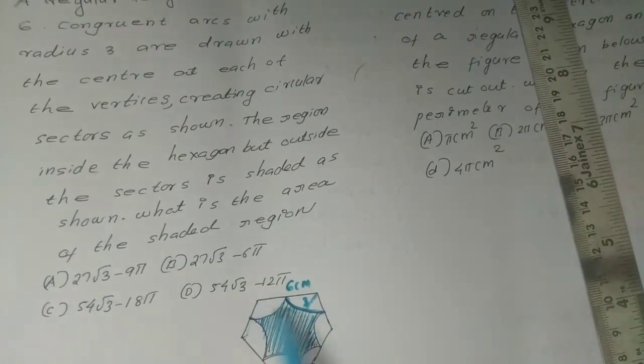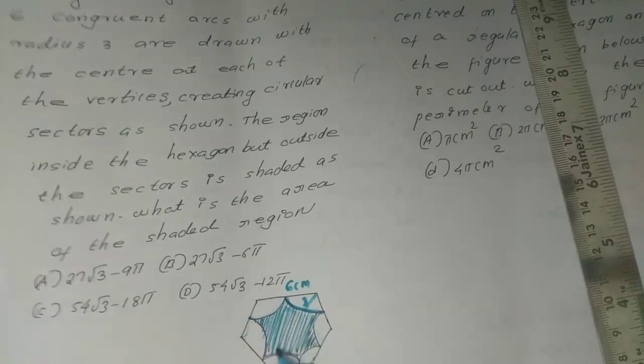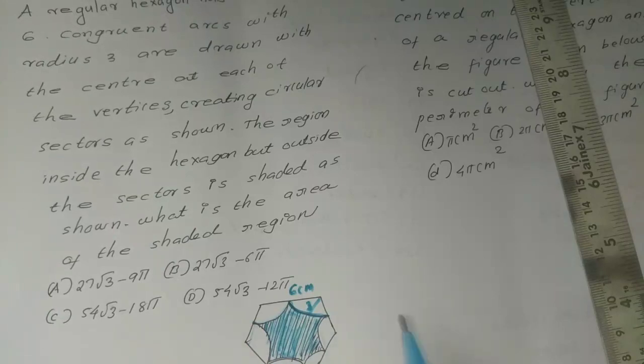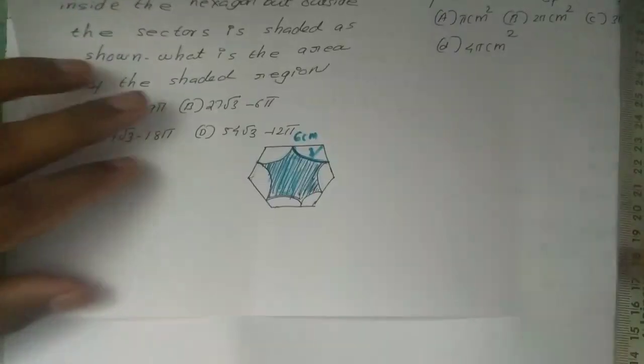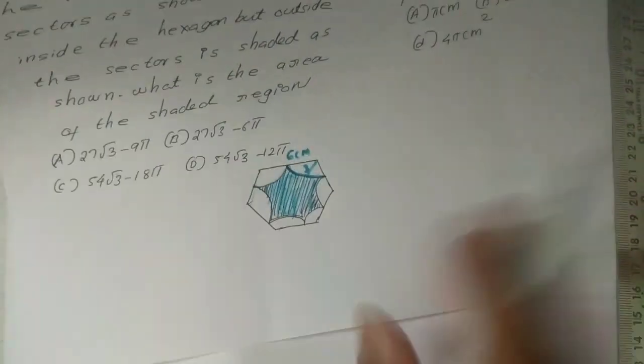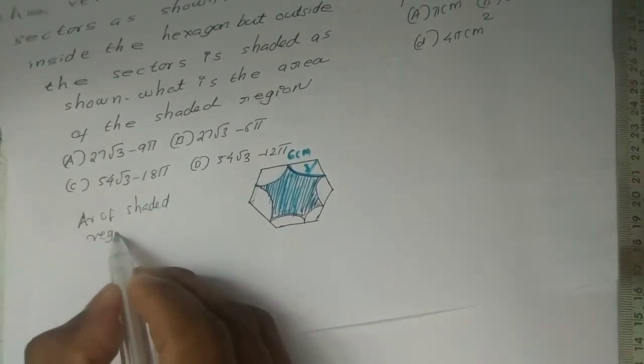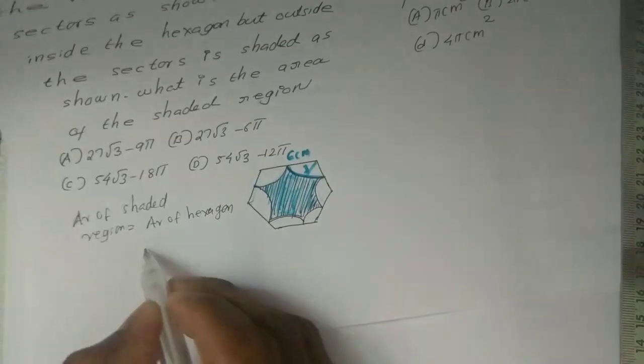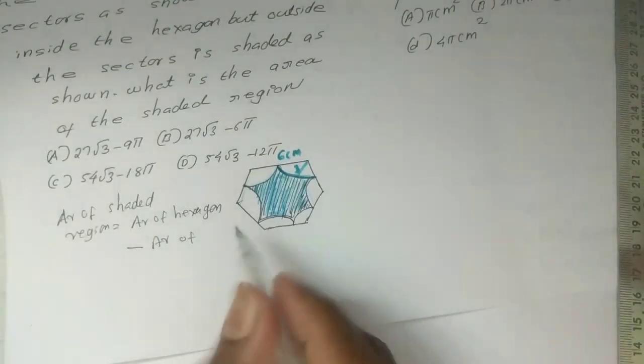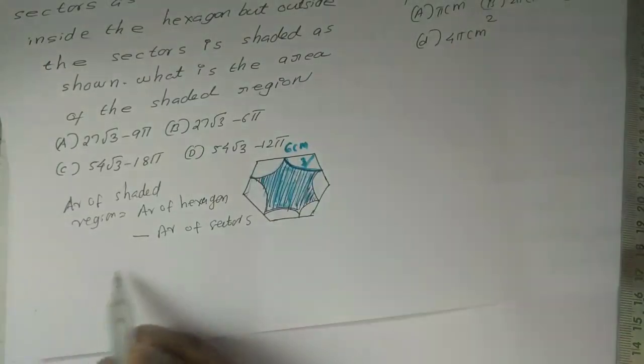This area, the region and sectors, the total area. We will do this. Area of shaded region equals area of hexagon minus area of sectors. That's the condition.